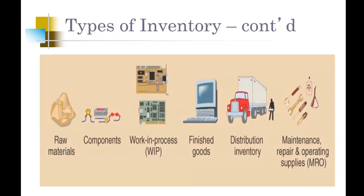Let's use another example — an iPhone or a Samsung phone. I have the raw materials for my iPhone: the screen, the back, all of the CPUs. The raw material could be the materials that make up the glass and the back of the phone. Once I take those raw materials and create the screen — the glass screen — that glass screen can be considered a component.